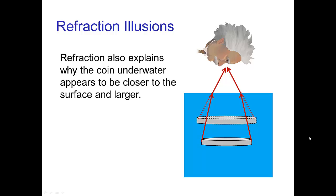Similarly, with the coin that's underwater, the light rays that come from the two sides of the coin, when they bend as they come out of the water, appear to us as if they are coming from other locations — which would be consistent with a coin that was closer to us and larger.